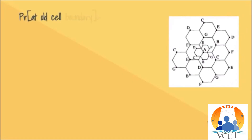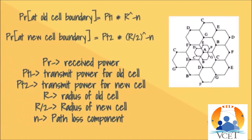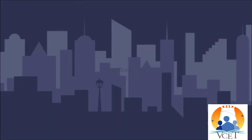We are going to calculate the received power. The received power of the old cell is directly proportional to the product of the transmitted power and radius with its path loss component. Similarly, the received power for the new cell is directly proportional to the product of the transmitted power and radius with its path loss component for the new cell.